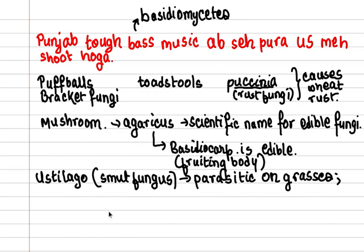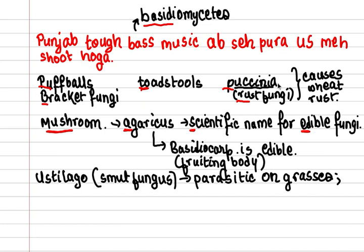These were the examples of class Basidiomycetes as given in the NCERT. Let us revise the trick one more time. Punjab: P for puff balls, B for bracket fungi, T for toadstools. BASS means Basidiomycetes. Music means mushroom. Then AB — AB means Agaricus, and SE stands for its scientific name as an edible fungus. You can remember that Agaricus is an edible fungi under Basidiomycetes. Then PURA — PU for Puccinia, RA for rust fungi causing wheat rust. US means Ustilago, and as it has G, it is parasitic on grasses.